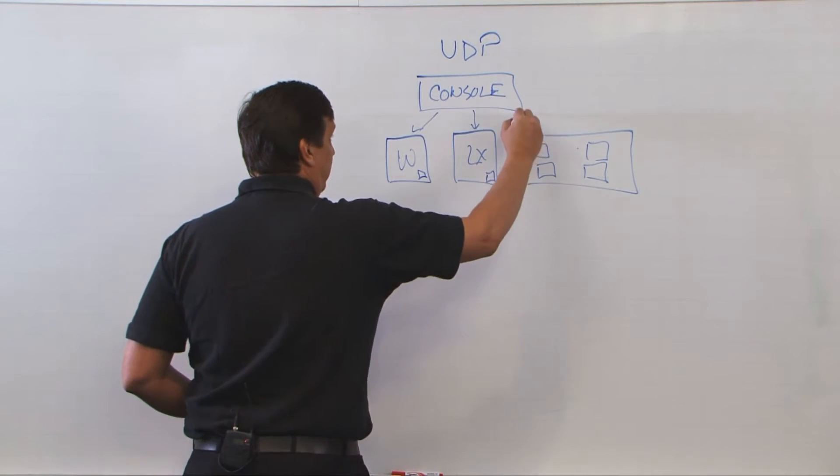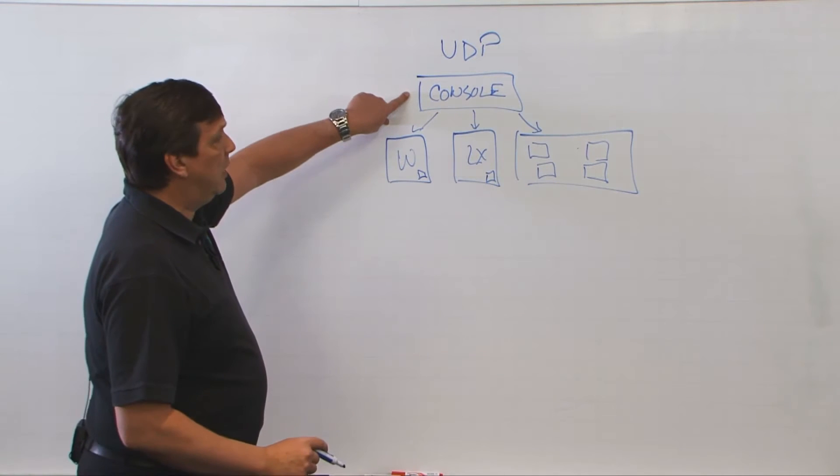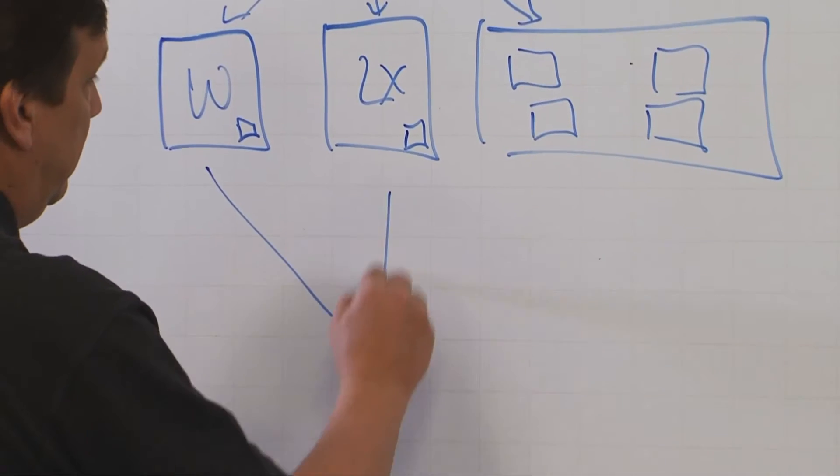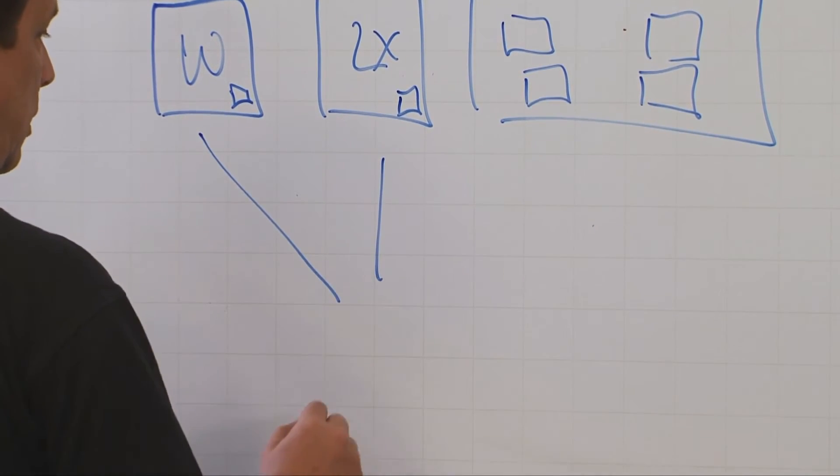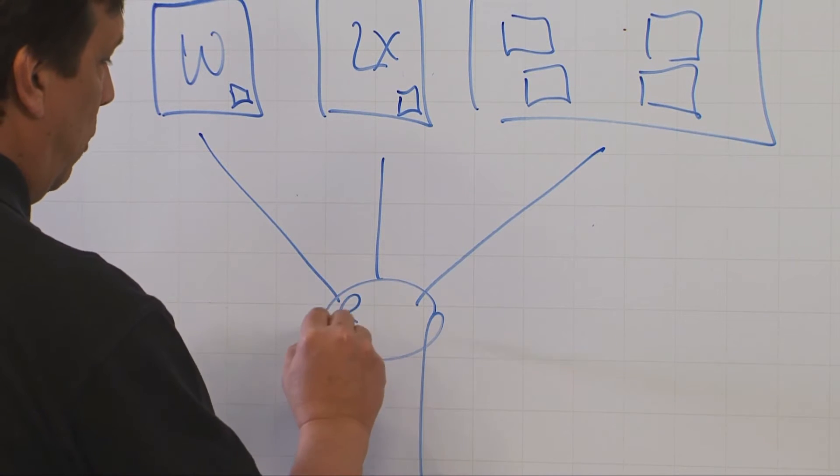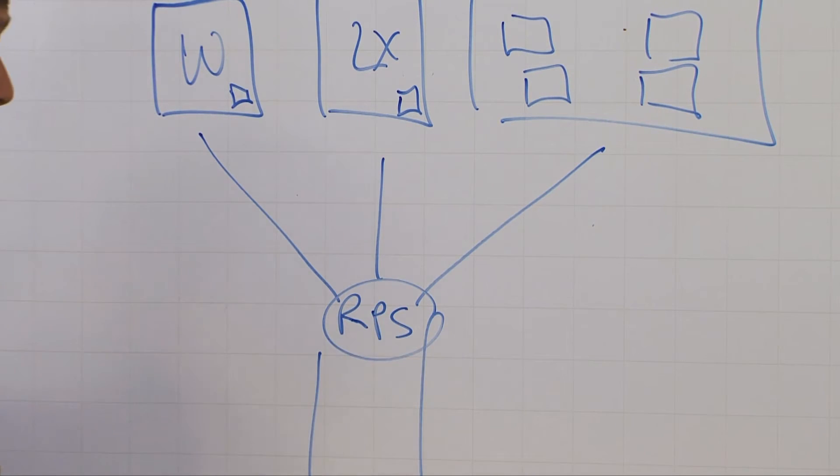So the second piece, first being the console, the second are the agents, and the third and most important piece is the central repository, or what we call the recovery point server.